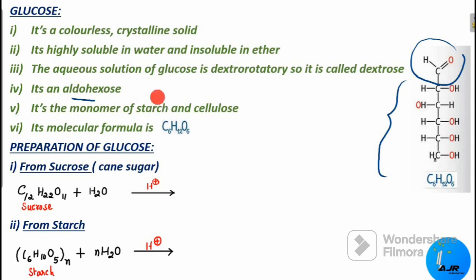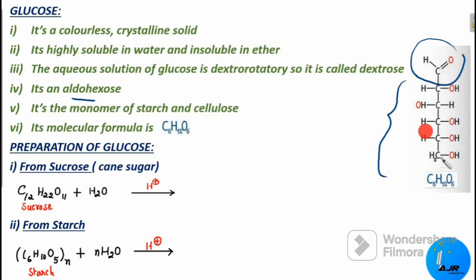The monomer means it is the building block — both starch and cellulose are made up of glucose. The molecular formula of glucose is C6H12O6: six carbon atoms, twelve hydrogen atoms, and six oxygen atoms.